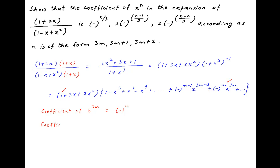Similarly, the coefficient of x raise to the power 3m plus 1 is equal to the product of the coefficient of x in the first component, multiplied by the coefficient of x raise to the power 3m in the second component, and this is equal to 3 times minus raise to the power m.